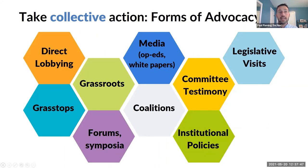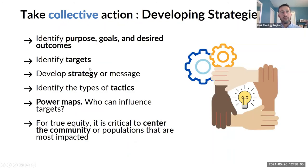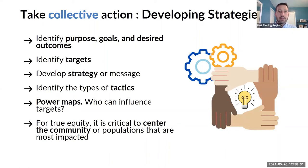You can use things like power mapping to identify who actually has influence and who is the person who gets to decide. And for true equity, many of us hold privileges because of the education we have or our other identities. But if we want true equity, we really need to center the community or populations that are most impacted. It's not us as health professionals always leading the way, but rather asking communities who are most impacted: how can we support you, how can we lift up your efforts and voices, and help the cause you've already been working towards?